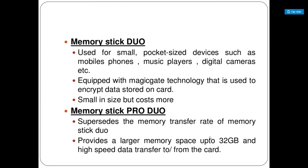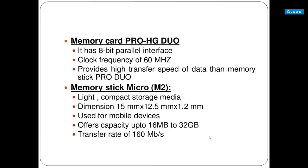Memory Stick Duo is used for mobile phones, music players, and digital cameras. It can encrypt data stored on the memory card. Its size is small but it costs more due to the technology used. Memory Stick Pro Duo supersedes the Memory Stick Duo — it is an advanced version providing larger memory space up to 32 GB and high-speed data transfer. Memory Stick Pro HG Duo uses an 8-bit parallel interface with a clock frequency of 60 MHz, providing higher data transfer than the Memory Stick Pro Duo.